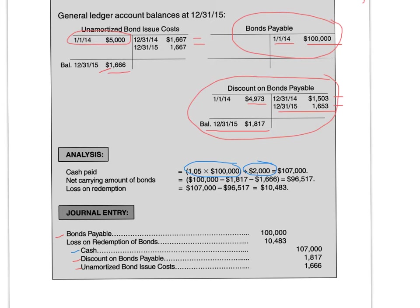Last but not least, once you've recorded all of those accounts, you're ready to recognize either a loss on bond redemption or a gain on bond redemption. How do you do that? Take a look at what you have. We have $100,000 on the debit side and a whole lot more than $100,000 on the credit side. The loss or gain is simply a plug-in. If you need an extra debit, that means it's a loss — losses are debits. If you need a credit, that means you have a gain on bond redemption. You can also utilize the analysis provided, though usually your journal entry in debits and credits will help you out.